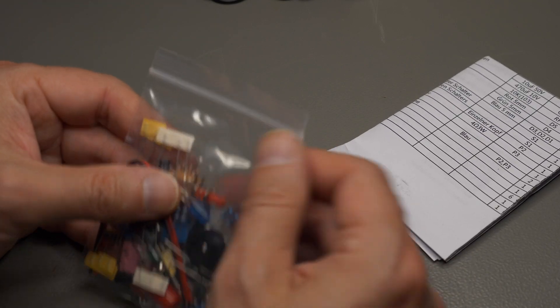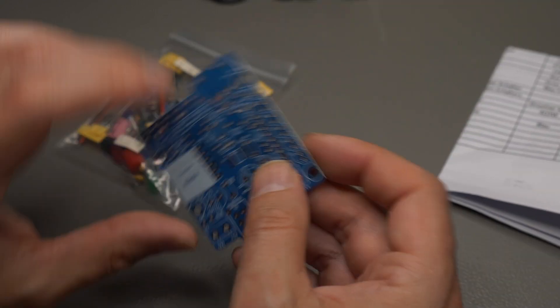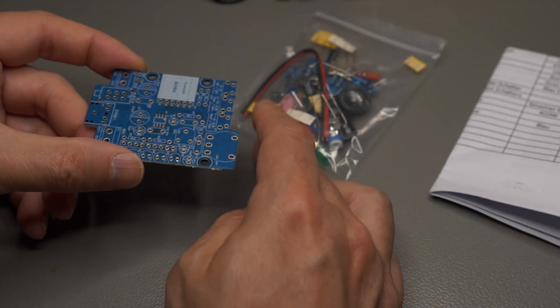And here we have all the parts. Let's quickly have a look at the, oops, and of course the PCB. That would have been a bummer if the PCB was missing.